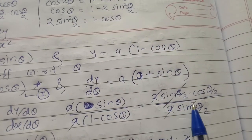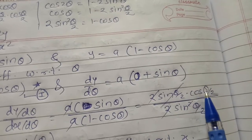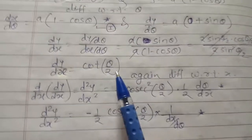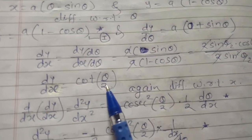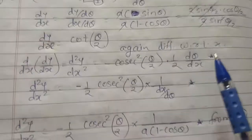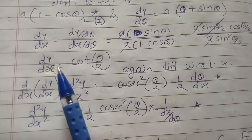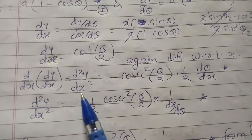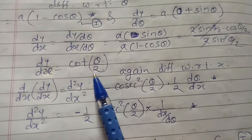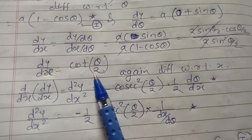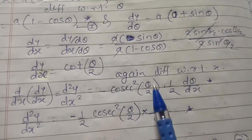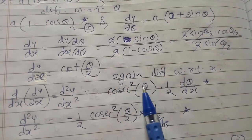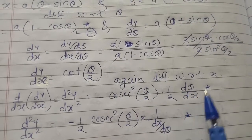The 2's cancel, sin(θ/2) cancels with one sin(θ/2), so the remaining quantity is cos(θ/2) upon sin(θ/2) — angle is same. So here we get cot(θ/2)... wait, the value of dy/dx is cos(θ/2). Again differentiating with respect to x, we take the derivative — that is d(dy/dx)/dx, which is d²y/dx². The derivative of cos(θ/2) is minus sin(θ/2) into half times dθ/dx.